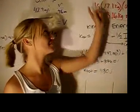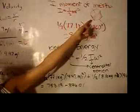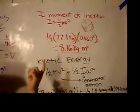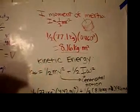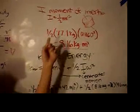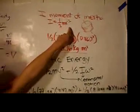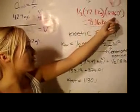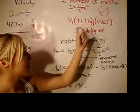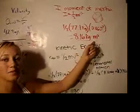The next step we have is to find I, the moment of inertia. Since Mike — we decided he was most like a solid cylinder with an axis through the center — the equation is one-half mass times the radius squared. So we plug in our numbers that we found earlier, and we end up with 8.16 kilograms times meters squared.